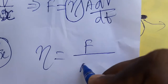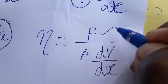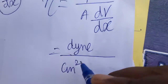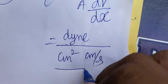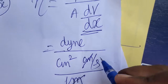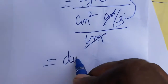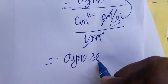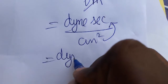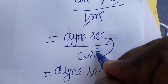The coefficient of viscosity equals force divided by area times dv/dx. In CGS: force is in dyne, area is in centimeter squared, velocity is in centimeter per second, and distance is in centimeter. The centimeters cancel, and taking the remaining centimeter to the numerator gives: dyne·second divided by centimeter squared, which is dyne·second·centimeter⁻².